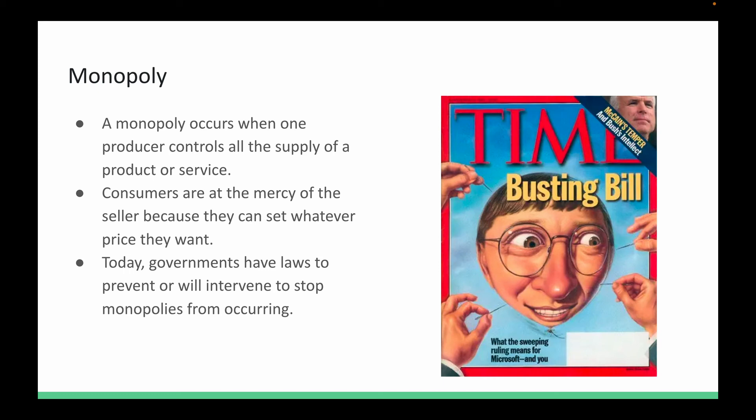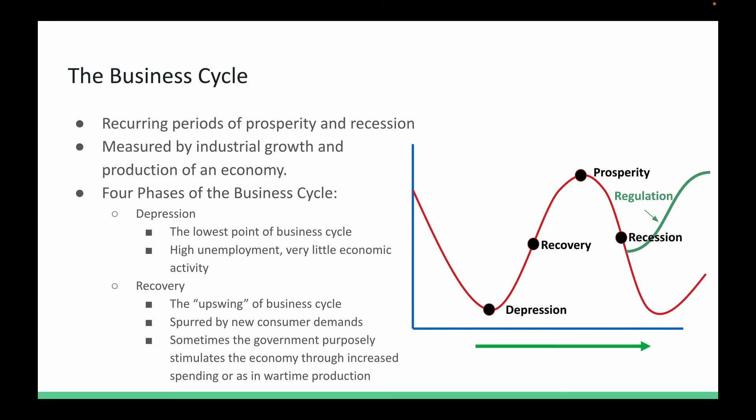Competition leads to innovation and efficiency. All of this is part of our mixed economy, and all businesses go through something called the business cycle — just like a roller coaster, ups and downs, periods of prosperity and recession. This is driven through a country's industrial growth and production. There are four main phases in the business cycle: depression, recovery, prosperity, and recession. There's also regulation in green — something the government does when it intervenes, which we'll talk about.